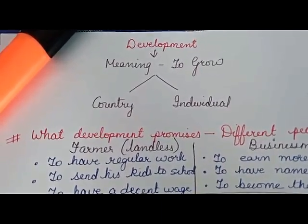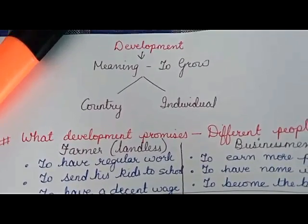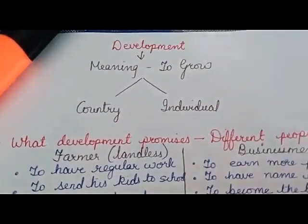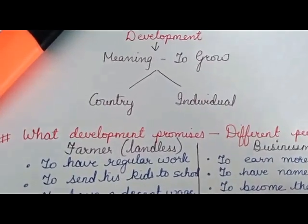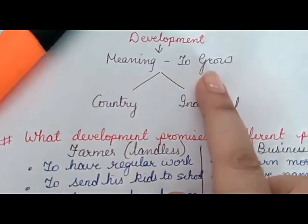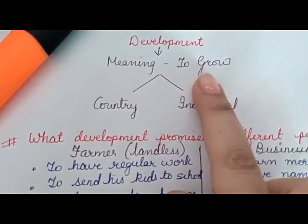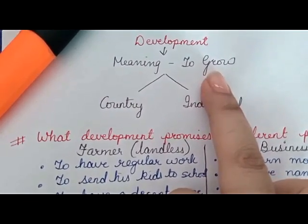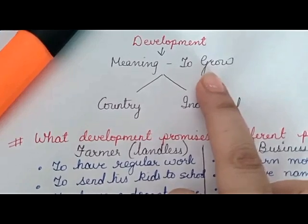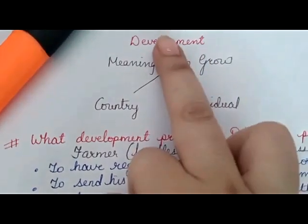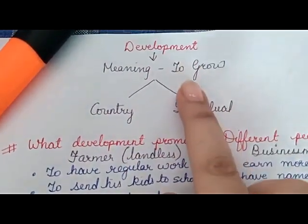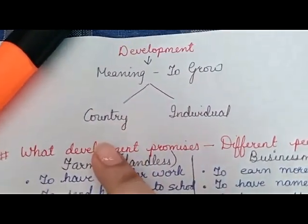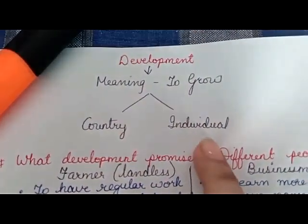Children, let me give you a summary of the first lesson of Economics in Class 10, which is Development. The basic meaning of development is to grow. If you look in the dictionary or in general, development means that if you are growing in any way, that is development. Now, development can be discussed under two headings: one is the development of the country, and one is individual development.